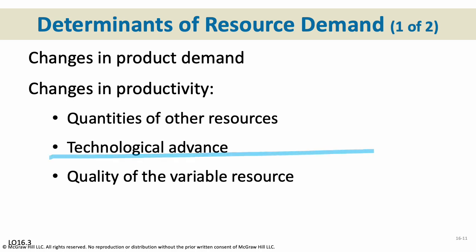Technological advances are a huge factor. We may invent new technologies where we no longer need a previously expensive resource, or need much less of it due to a new manufacturing process. If we make a new battery that doesn't require lithium, that would greatly change the demand for lithium. And finally, quality of the resource: better quality resources generally mean you need less of them, while inferior quality resources generally mean you need more. Better quality resources, if available at a decent price, are generally a very good thing.